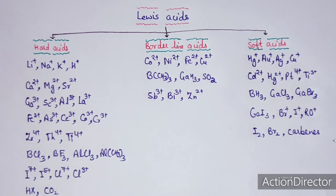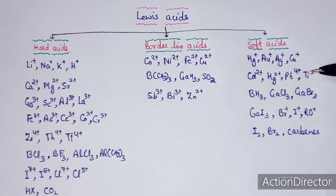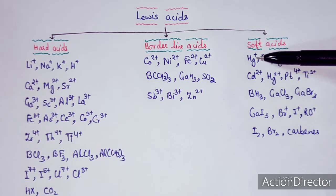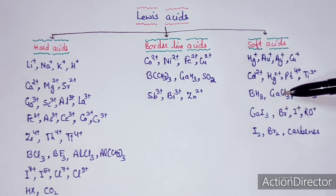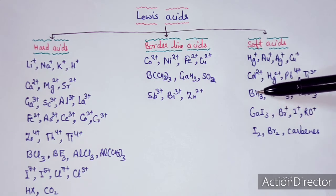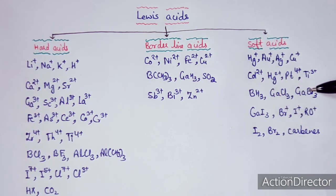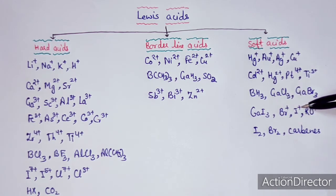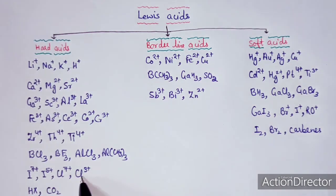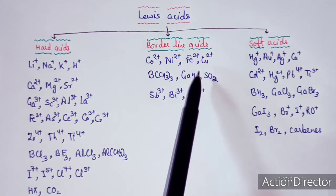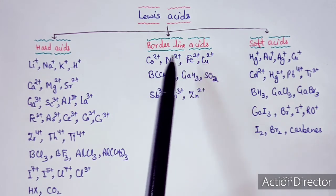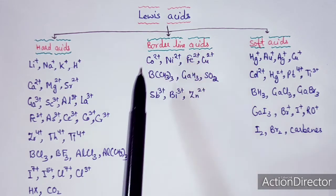Soft acids are cations of large size with low oxidation state, such as heavier transition elements like palladium and platinum. They have a large number of d electrons, which makes them easily polarizable. They form stable complexes with Class 2 soft base ligands. Borderline acids, such as transition metal ions of the first series with +2 oxidation state, have properties in between soft and hard acids.